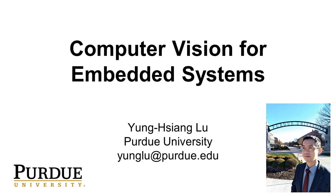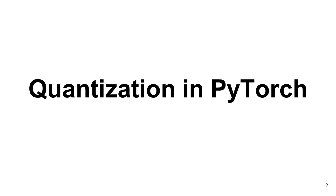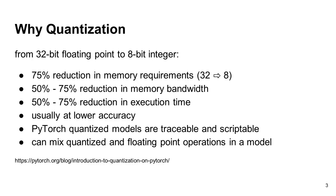Earlier, I have already explained the concept of quantization. Quantization reduces the precision of parameters. Quantization is a way to reduce the execution time and also reduce the requirement for memory. Because by reducing the precision, we can use fewer bits to store the parameters. Quantization is so important, and PyTorch supports quantization. This lecture will provide an introduction of PyTorch's features for quantization.